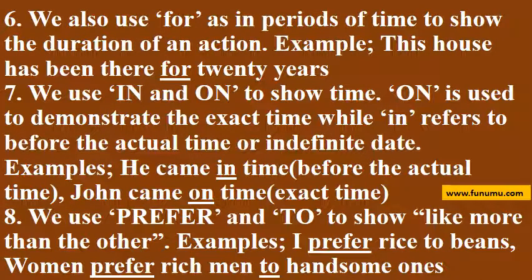6. We also use for in periods of time to show the duration of an action. Example: This house has been there for 20 years. 7. We use in and on to show time. On is used to demonstrate the exact time, while in refers to before the actual time or an indefinite date. Examples: He came in time — before the actual time. John came on time — exact time.